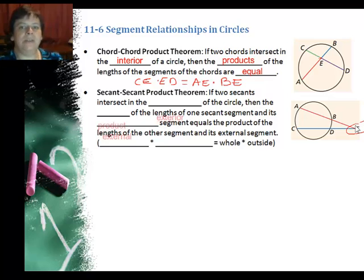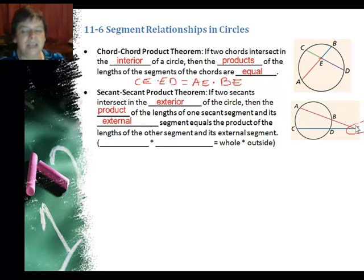So if two secants intersect in the exterior, outside of a circle, then the product of the lengths of one secant segment and its external segment equals the product of the lengths of the other segment and its external segment, and you're probably wondering what I just said. So the easiest way to picture this is it's the whole segment, which is say AE, and that's not what goes in the blank, hold on, times, so we can say whole,